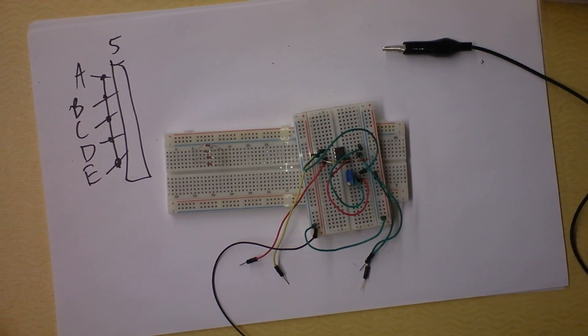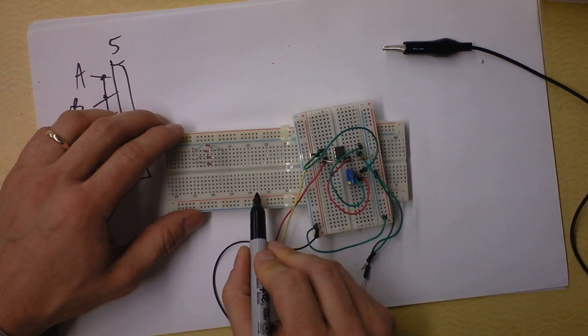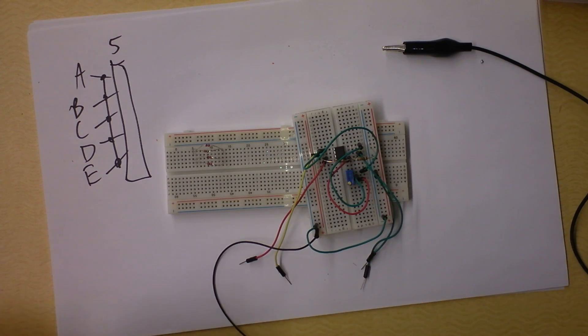So solderless breadboards are super useful. Things to remember: everything in row 20 is connected to itself, everything in row 38 is connected to itself. And you got a channel that's negative and a channel that's positive. That's it.